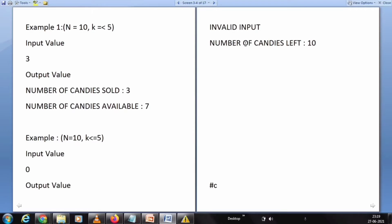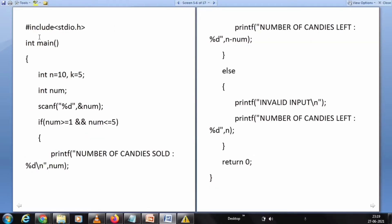Let's see a C program for this. The C program follows as N equals 10, K equals 5. Int number is taken as a variable where scanf, we should take the value of number. If number is greater than or equal to 1 and number is less than or equal to 10, then print the number of candies sold and print the number of candies left. Else, print invalid input and number of candies left. This is the simple C program.